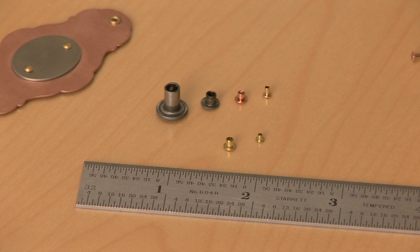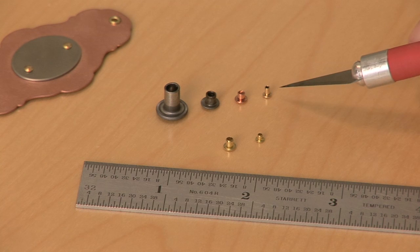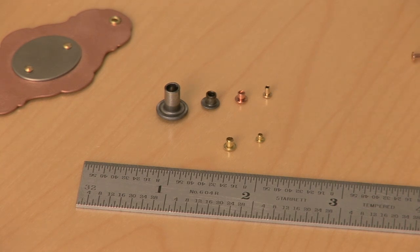Rivets and eyelets are designed to fit standard size holes. To do that, they need to be sized slightly less than the diameter of the hole.